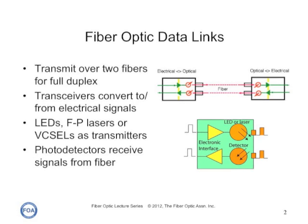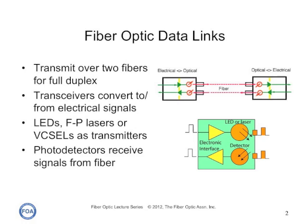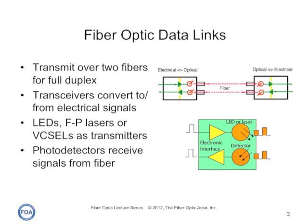At the far end, the light is coupled to a receiver where a detector converts the light into an electrical signal, which is then conditioned by the receiving equipment. Most links use two fibers, transmitting in opposite directions for full duplex operation.